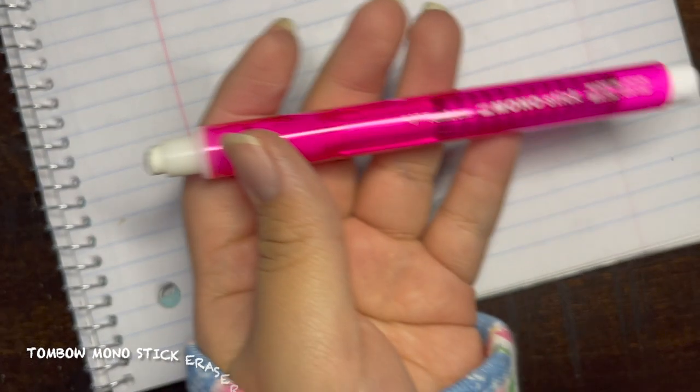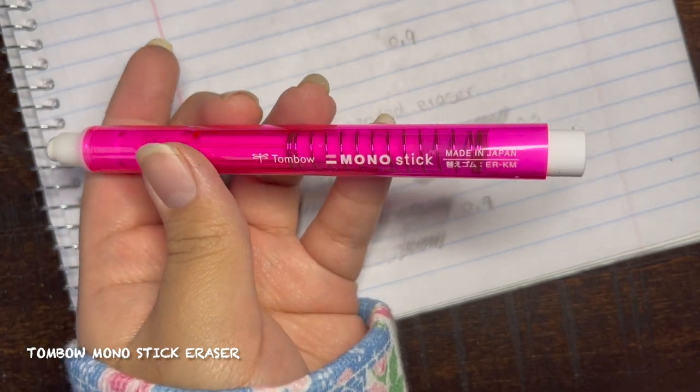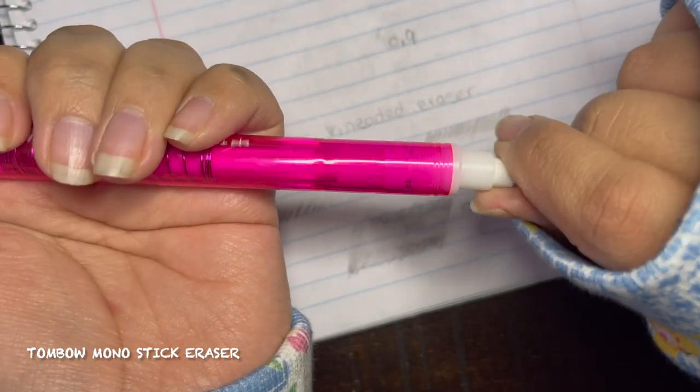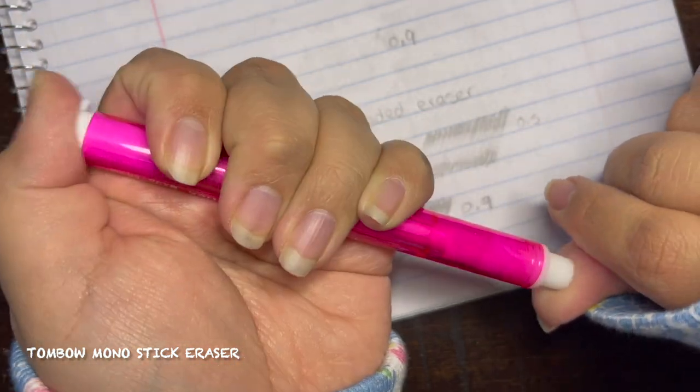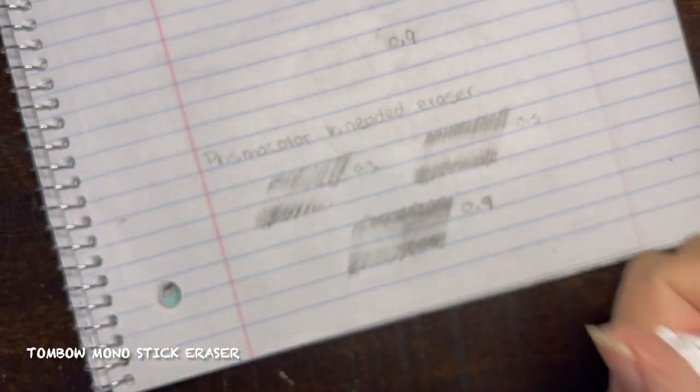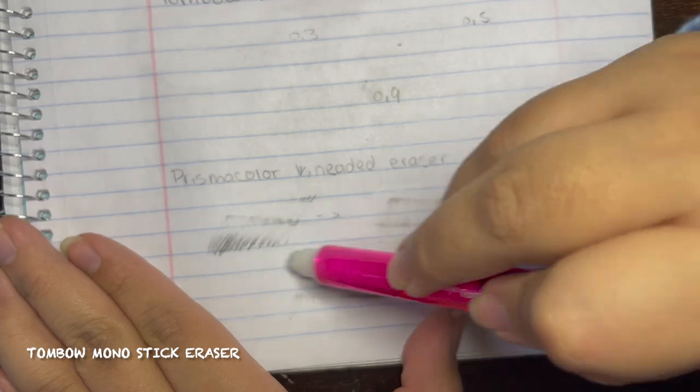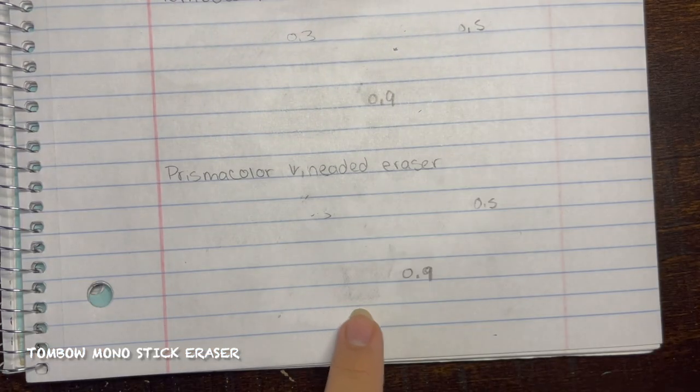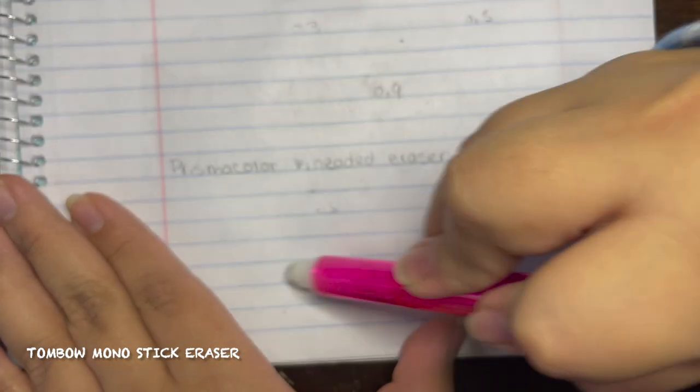And then the next one is this Tombow Mono stick eraser. It is just like the block except it comes in a little barrel that acts as a pen. I love this one because it erases small mistakes. If you guys saw my what's in my pencil case video I showed this because I had to do a lot of sketching last semester, so this one came in clutch so much and I love this one. It is great, it is amazing. But because I completely forgot about this eraser it won't be able to qualify because I had already made the list before I added this one. So it'll just be an honorable mention as well as the Prismacolor kneaded eraser.